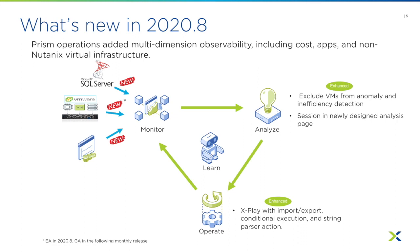For example, how do we forecast cost, or how do we report cost alongside performance and capacity data? But observability cannot work until you know what you're observing for. To address that, we're providing agentless application discovery capabilities as part of the operations offering in Prism.